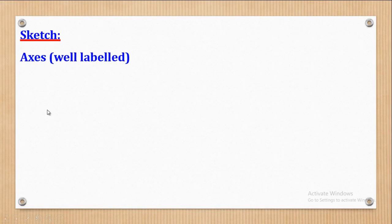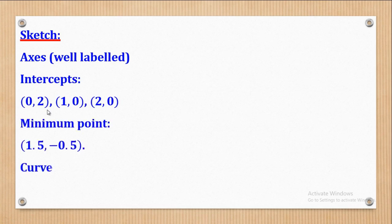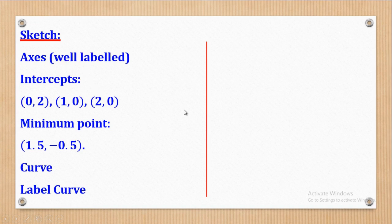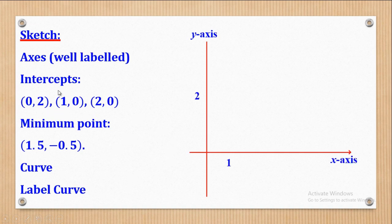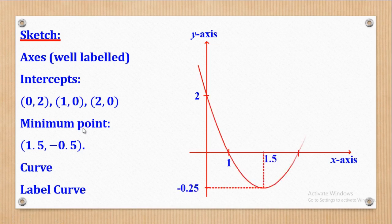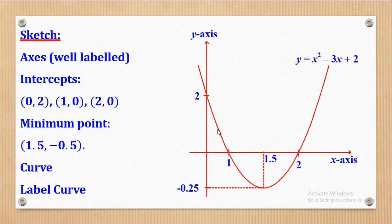Next will be the sketch. For the sketch you will need: first, draw the axes; second, locate the intercepts; third, locate the turning point; then draw and label the curve. Remember, this is a sketch — you don't need graph paper. Locate the y-axis and x-axis, then plot the intercepts and the turning point. Since this was a minimum point, the curve takes a U-shape. Finally, label the curve.